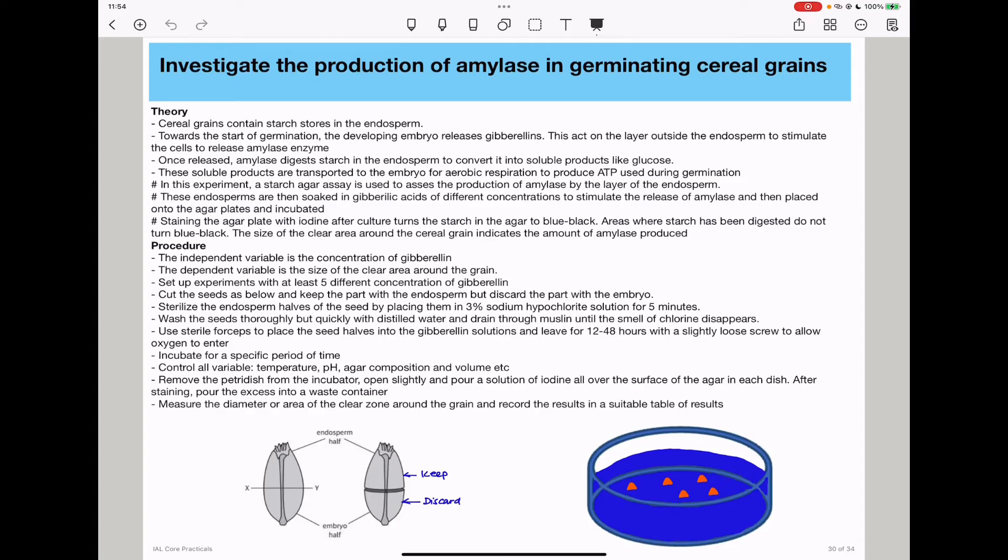Set up at least five different concentrations of gibberellin. Cut the seeds, keeping the endosperm but discarding the embryo. Sterilize the endosperm halves by placing them in 3% hypochlorous acid solution to remove any unwanted microbes.